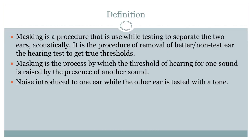First we will see what is masking. Masking is a procedure that is used while testing to separate the two ears acoustically. It is a procedure of removal of the better ear, meaning the non-test ear, from the hearing test in order to get the true threshold.